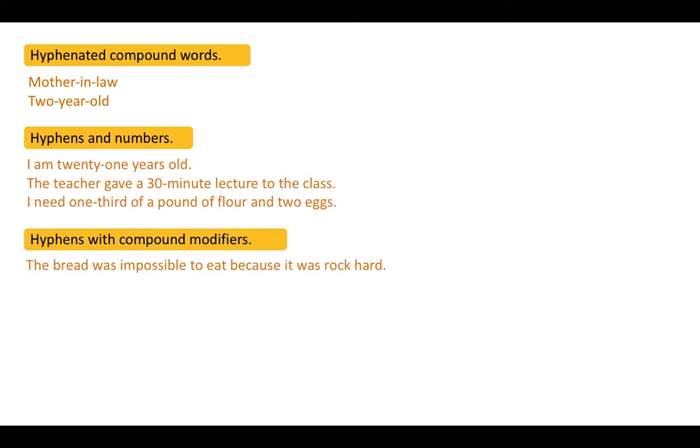For example, the bread was impossible to eat because it was rock hard. So here, the noun comes before the adjective, so we leave the hyphen out.